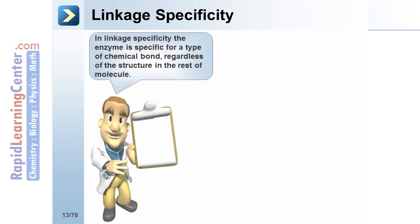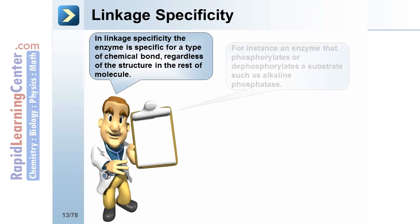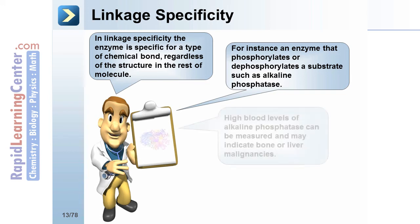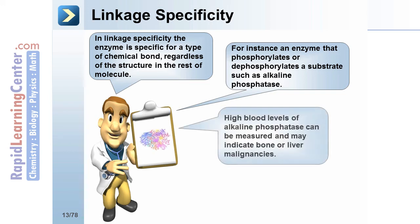Linkage specificity: In linkage specificity, the enzyme is specific for a type of chemical bond regardless of the rest of the molecular structure. For instance, an enzyme that phosphorylates or dephosphorylates a substrate, such as alkaline phosphatase. High blood levels of alkaline phosphatase can be measured and may indicate bone or liver malignancies.